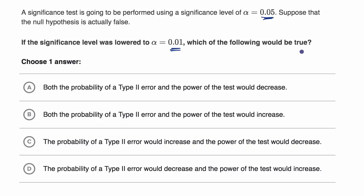So pause this video and see if you can answer it on your own. Okay, now let's do this together. They're talking about how the probability of a type two error or the power would change. So before I even look at the choices, let's think about this.